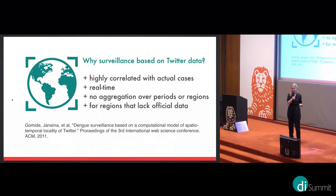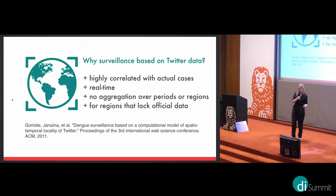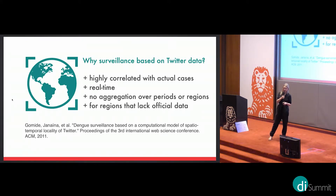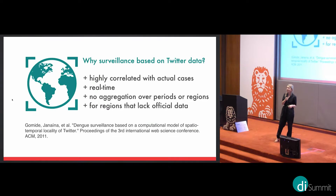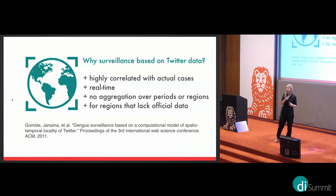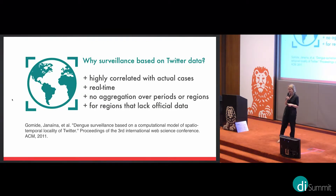We used Twitter because we knew from a paper that tweets are actually very correlated to actual dengue cases, given that you have a way to filter out personal experiences. It's also real-time and not aggregated over periods or regions — unlike official data that can be aggregated over a month, a year, or a whole country, which is not really useful for monitoring dengue outbreaks in a specific city.